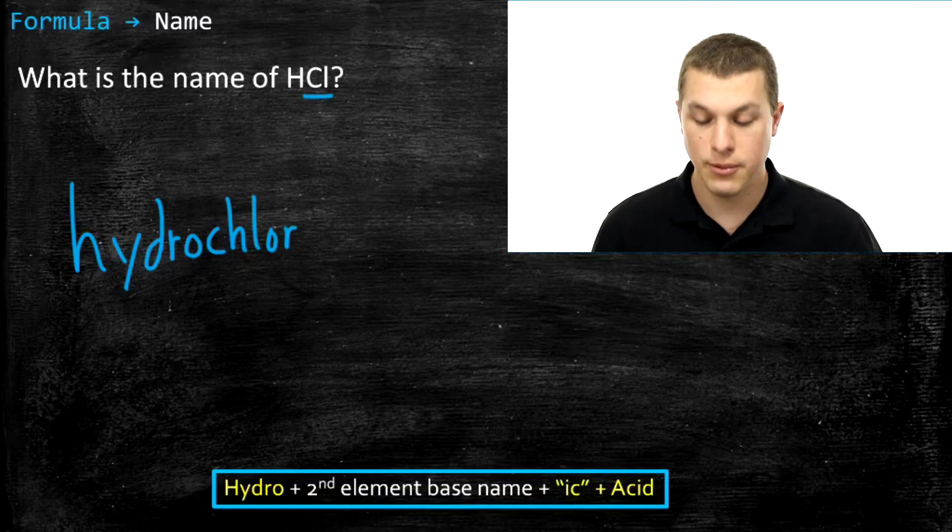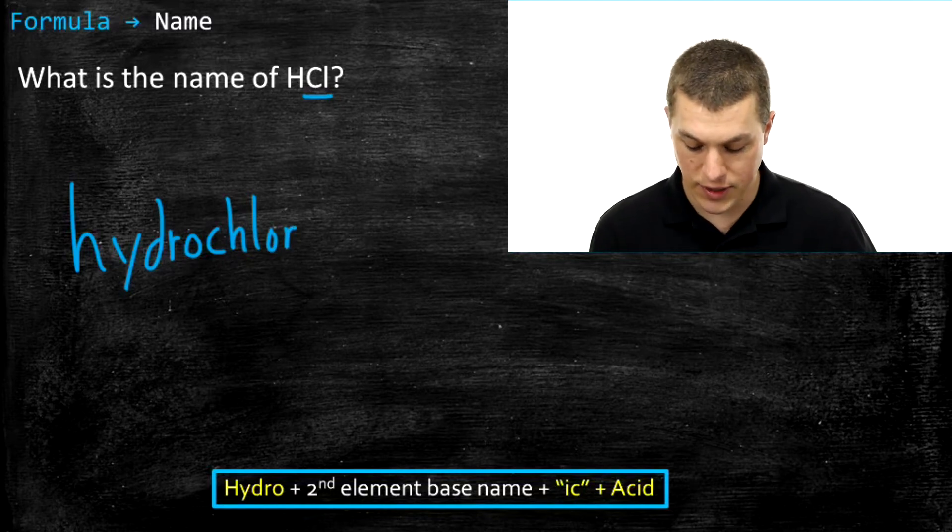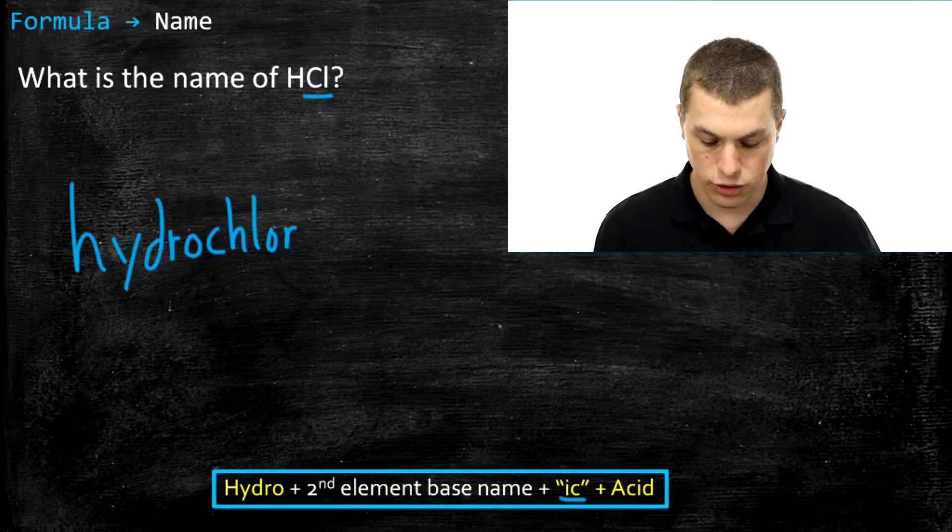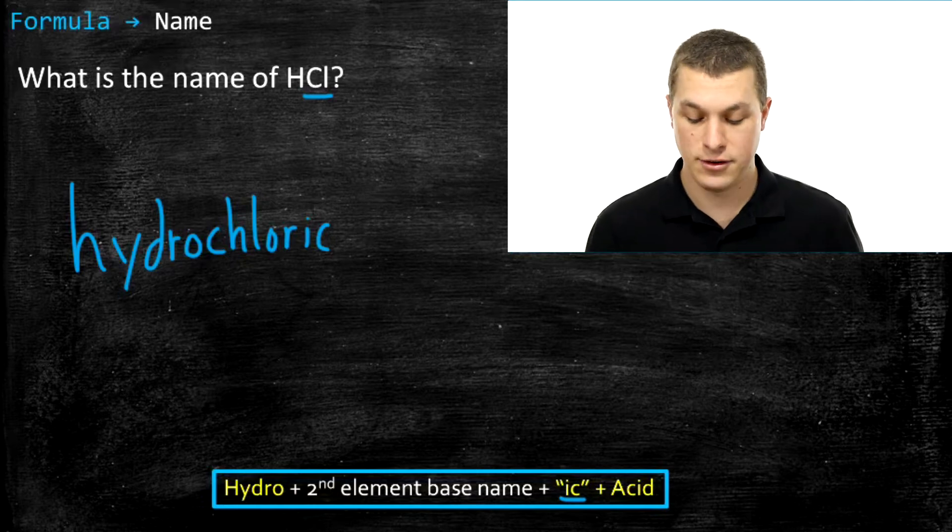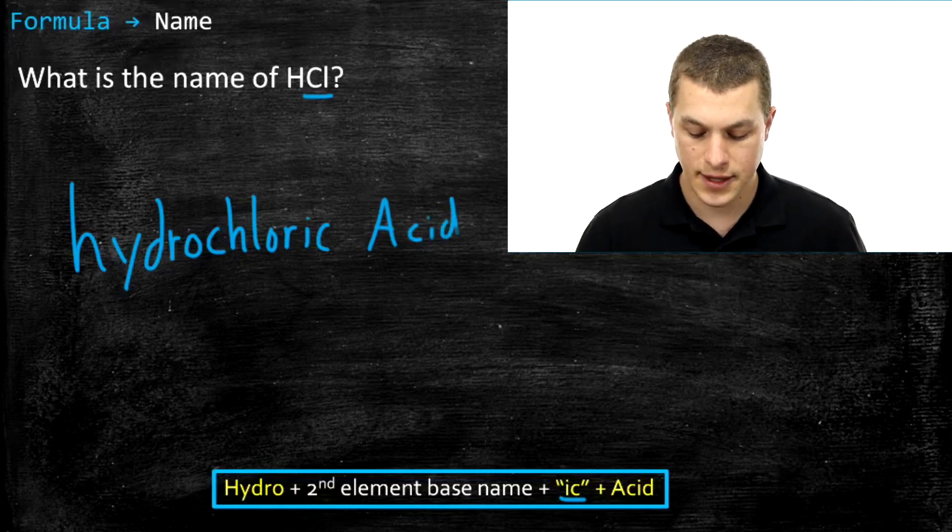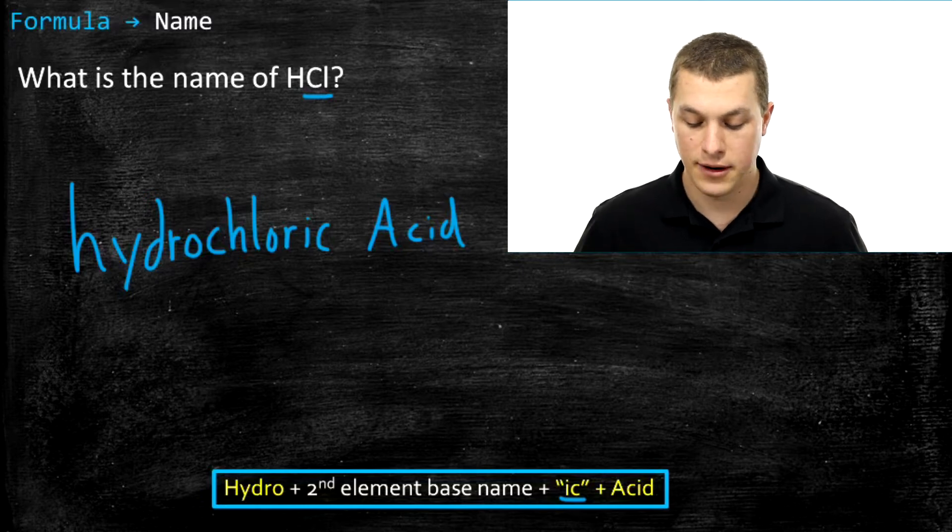And now we go ahead and we add ic. We always add ic to the base name of our second element. So it becomes hydrochloric. And then to complete it and make it clear that it's an acid, we always write the word acid afterwards. So that's it. Those are the rules for naming a binary acid.